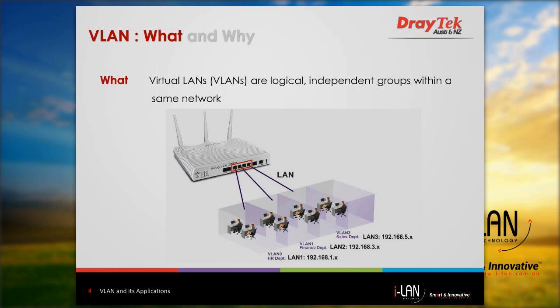VLAN is an abbreviation of Virtual Local Area Network and it is a group of devices on one or more LAN subnets that are configured to communicate as if they were attached to the same wire, while in reality they are located on a number of different LAN segments. VLANs are based on logical instead of physical connections, and hence VLANs allow network administrators to partition their networks without having to run new cables or make major changes in their current network infrastructure.